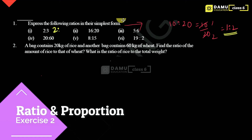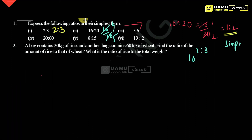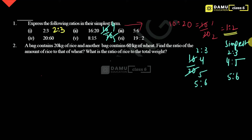So 2:3 in simplest form is 2:3 only. Then 16:20, that is 16 by 20 — four 4s are 16, four 5s are 20 — so that gives 4:5. Then 5:6 remains as 5:6 only.